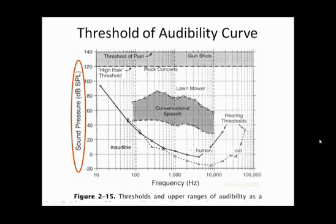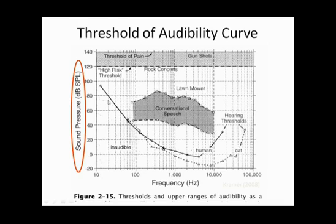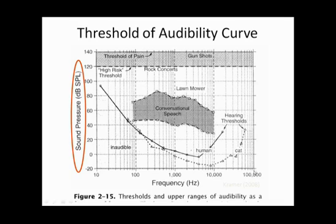This is from the Kramer text, Figure 2.15. The y-axis shows sound pressure level in dB SPL and the x-axis shows frequency in hertz. The dark line represents average thresholds for humans in dB SPL. This extends beyond our typical audiogram that starts at about 125 or 250 hertz and goes to 8,000 hertz — this graph goes all the way up to 100,000 hertz and down to 10 hertz.